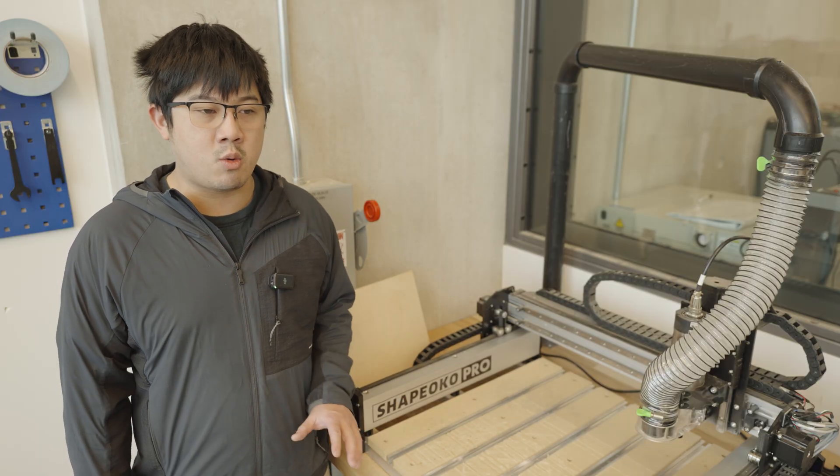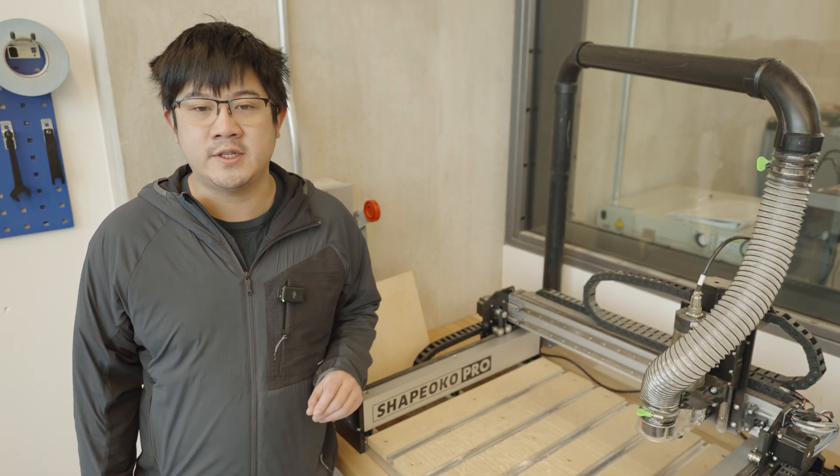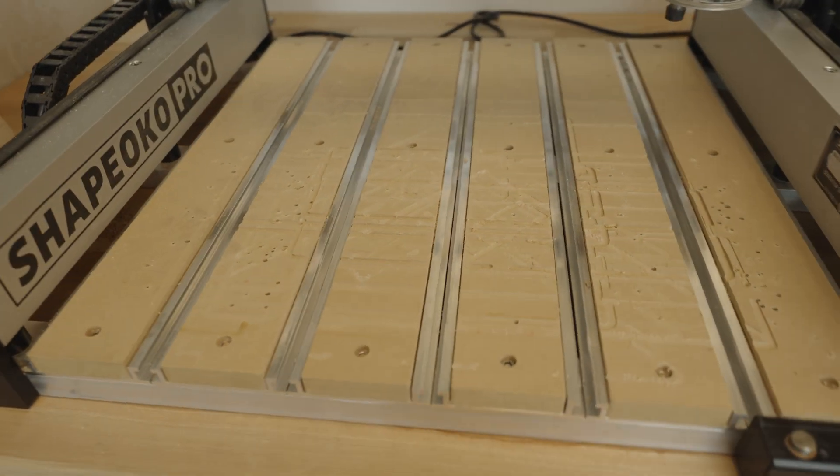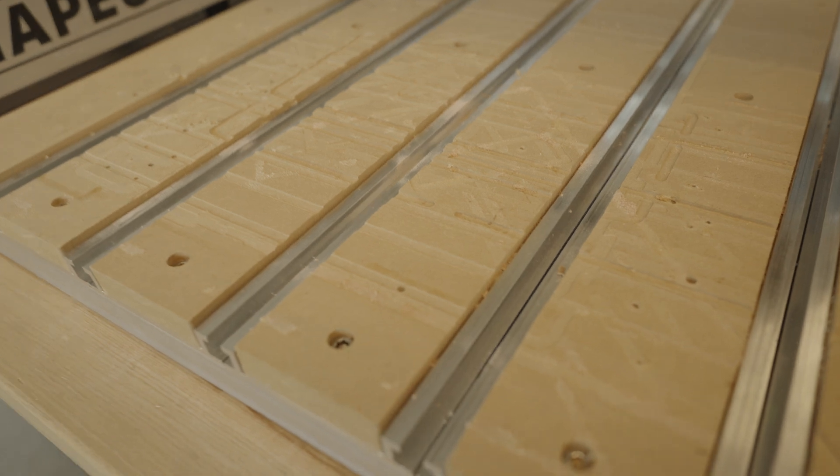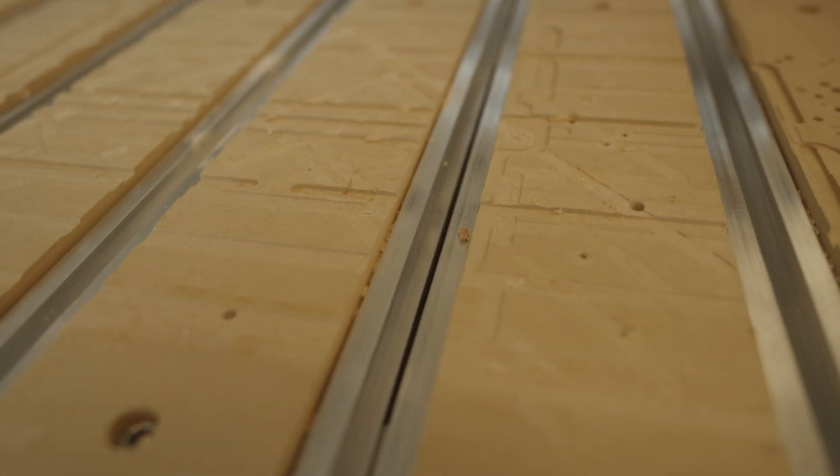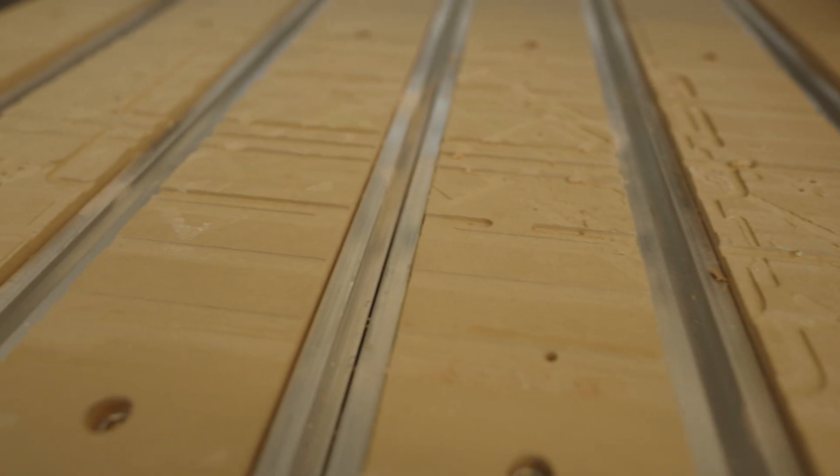Now, next step is we're going to secure our workpiece to the table. One of the hardest things to do is actually securing your workpiece in a way that is going to be rigid enough for the machine to cut, as well as convenient for you to do in a reasonable amount of time.